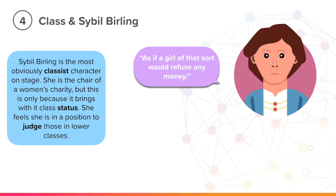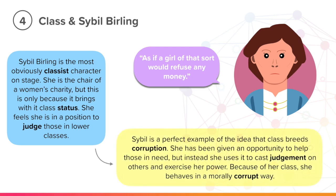She is referring to Eva, who claimed not to be receiving help from the father of her child because she couldn't take the money. To Sybil, working class people would take anything they can get, regardless of whether they are stealing or breaking the law. However, the fact that Eva did not steal the money shows us that Sybil's ideas about working class people are wrong. Sybil is a perfect example of the idea that class breeds corruption — the class system encourages people to act unfairly towards each other. She has been given an opportunity to help those in need, but instead she uses it to cast judgment on them and exercise her power, showing us how damaging Priestley thinks class is.